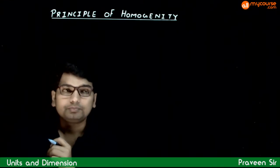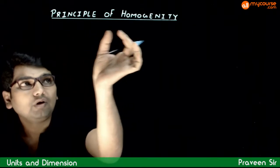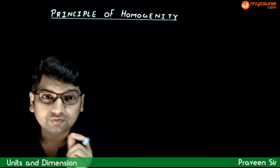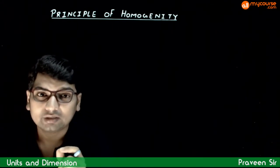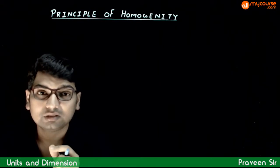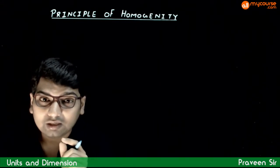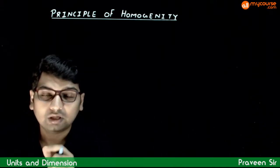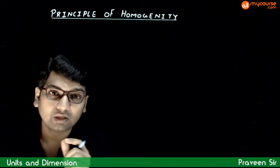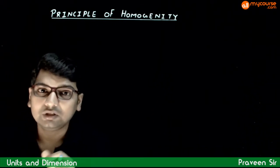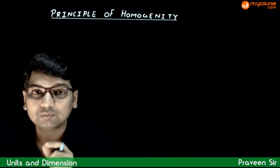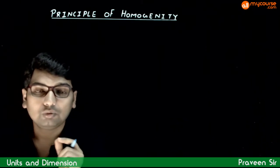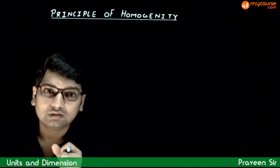Yeh principle kya kehta hai? The principle of homogeneity says that aap kabhi dho different quantities ko add ya subtract ya equate nahi kar sakte. That means, aap kabhi dho aysi quantities ko add nahi kar sakte jinka dimensions different ho, subtract nahi kar sakte, aur equate bhi nahi kar sakte. Kyunki dhonoh alag-alag chijayi represent kar rahe hai.